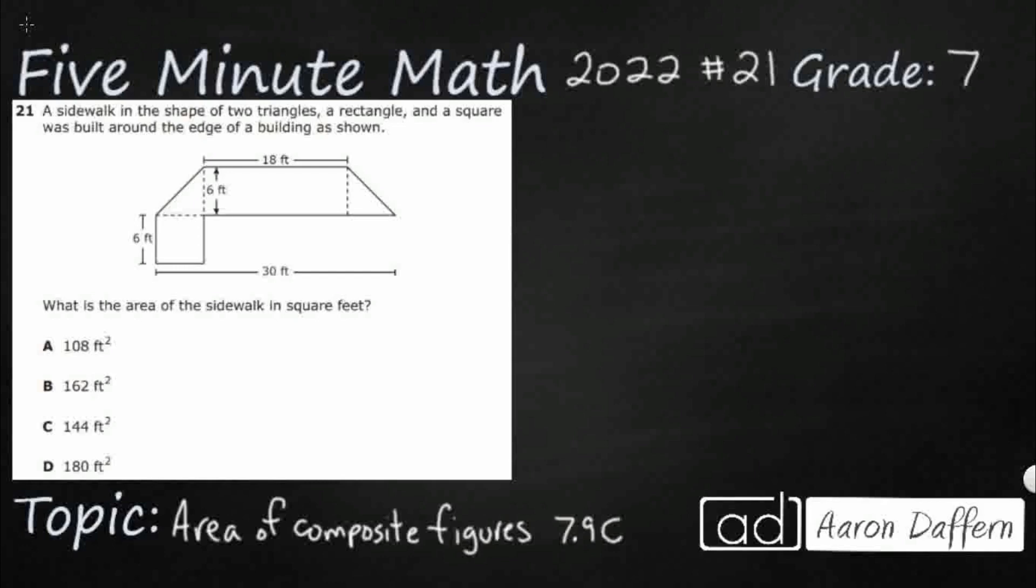So we've got a sidewalk, and it's made up of two triangles, a rectangle, and a square. So we are going to use something called the additive property of area. What this means is that you can take some shapes, and if they are next to each other, touching but not overlapping, you can find the area of each smaller shape, add them all together, and get the area of the larger shape. So we've got this strange-looking sidewalk here, but we're going to break it down into two triangles, a rectangle, and a square and just add up those four chunks.